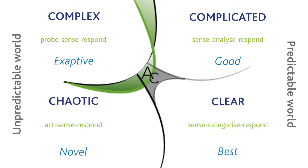To summarise: in clear, everyone can see an obvious link between cause and effect and we deploy best practice. In complicated, experts can find a link between cause and effect and we reach for good practice. In complex, there is no discernible link between cause and effect, so practice is emergent or adaptive and comes through experimentation based on hypotheses. In chaos, there is the possibility of novel practice if you can make it safe to do so.